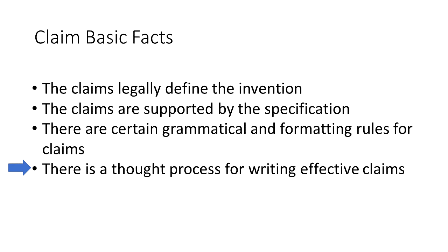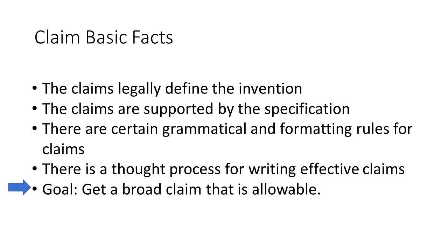It is one thing to write a claim that follows all the rules; it is another thing to write an effective claim. We could devote multiple videos to claim writing, but for this video we are going to focus on the thought process for writing an effective claim. A main goal of claim writing is to get a broad claim that is allowable. Allowable means the patent office will approve it, and broad means the opposite of specific. If the claim is too specific it may be allowed but easy for a competitor to get around by simply changing minor details. So the goal is broad and allowable.